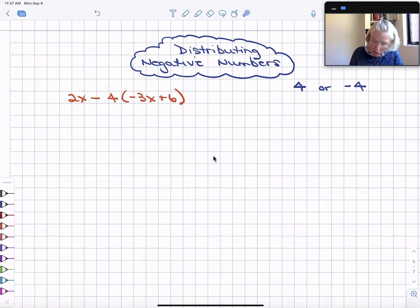I always will take subtraction and write it as addition of the opposite. Once you're in addition, the sign of the number is really clear which way we go.